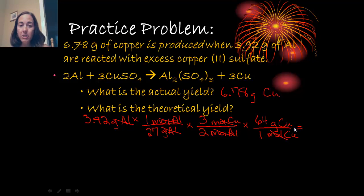Now when I get ready to do the math, I'm going to multiply everything across the top of those fractions. So I'm going to have 3.92 times 1 times 3 times 64. And then I'm going to divide by everything on the bottom. So I'm going to divide by 27 and I'm going to divide by 2. And the answer that I get here is 13.9 grams of copper. That's how much copper I should produce.